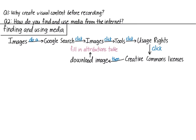Sometimes I find what I need faster by searching Wikipedia, since the vast majority of media on Wikipedia is open source or has a Creative Commons license. So there's no need to filter your search when you search Wikipedia. You can search just for images, or you can search articles and find the images within them. Once you've found a good image, you can download it and fill in the attributions table.